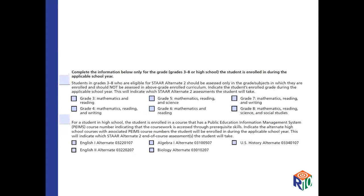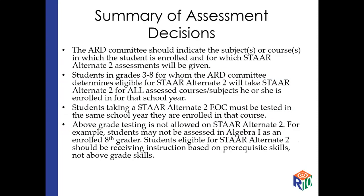The last part talks about which grade the student is in and shows the test they'll be taking. For a student in high school, it gives you the PEANS information. The ARD committee should indicate the subjects they'll be taking, and they have to be tested in the same school year that they're enrolled in the course. That's simple for a third grader, but sometimes in high school it comes down to — for example, all ninth graders take biology, but maybe we're going to do something else for science this year and come back to biology next year. They'll take the test when they take the course.